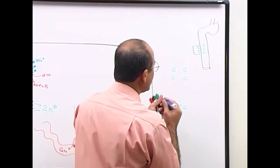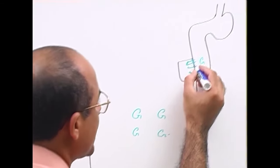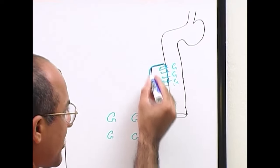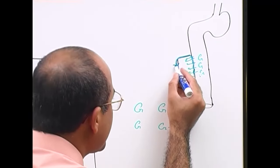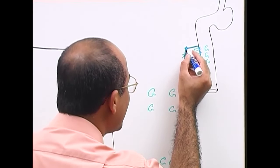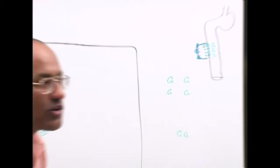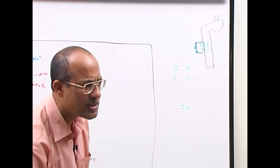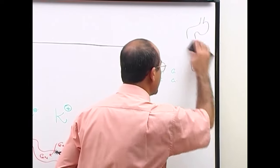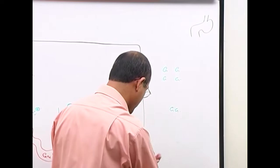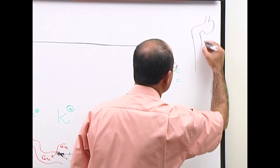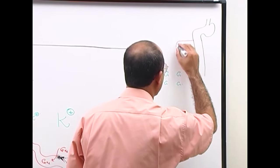This is the luminal side of the membrane and this is the basolateral side. On the basolateral side are sodium-potassium ATPase pumps performing primary active transport—taking sodium against the concentration gradient to the outside and bringing potassium inside.